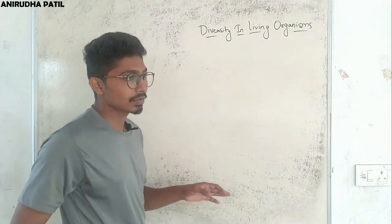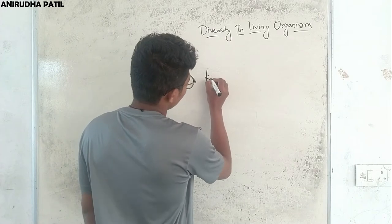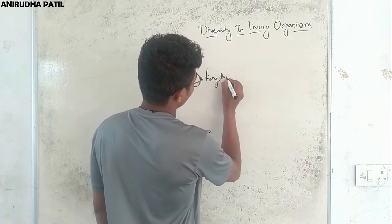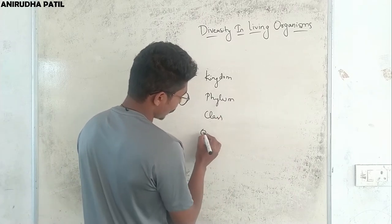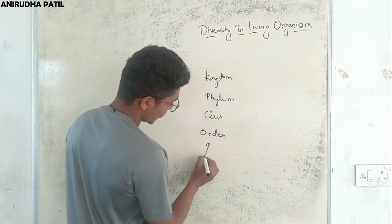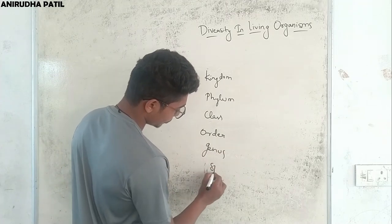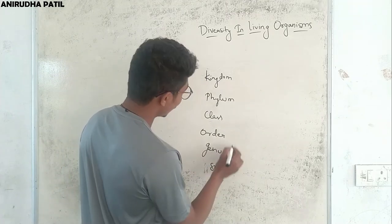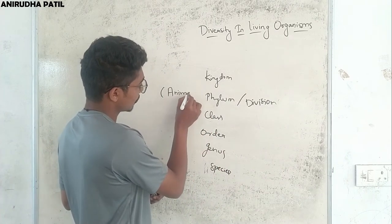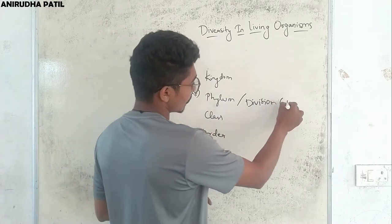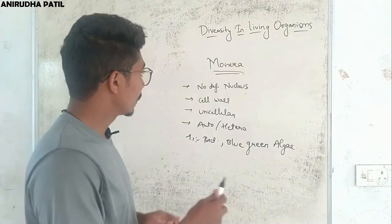Further, the classification is done by subgroups. Some of the subgroups are: Kingdom, Phylum, Class, Order, Genus, and Species. Note that Phylum is used in case of animals, and Division is used in case of plants.